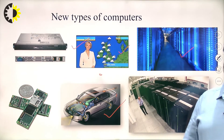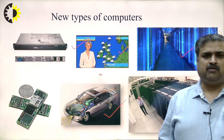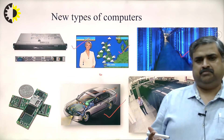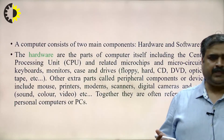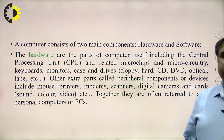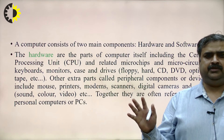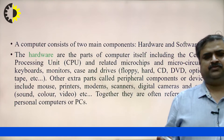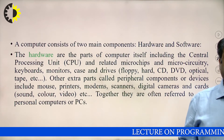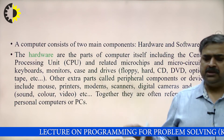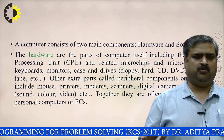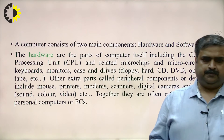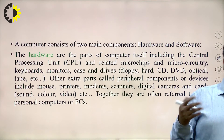Smart TVs are also a kind of computer; they have Android operating systems and can have different apps installed, working like a smartphone. These computers broadly consist of two components: hardware and software. Hardware includes the parts physically visible to us, like CPU-related microchips, motherboard, ports such as USB and DVD ports, keyboards, mice, and monitors.